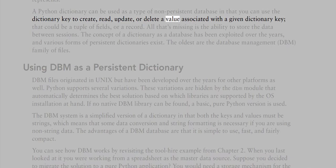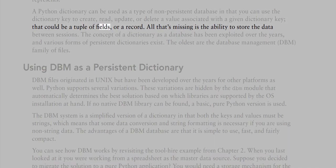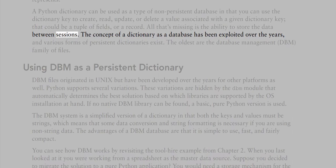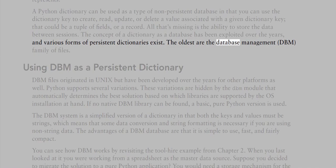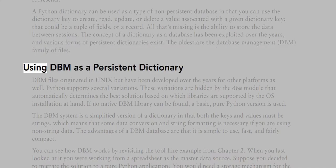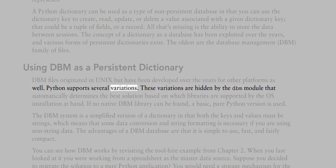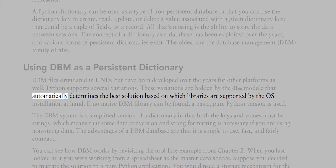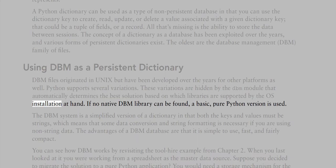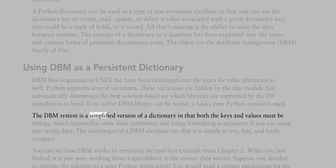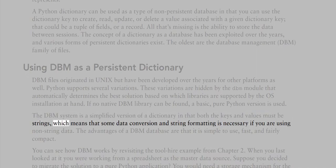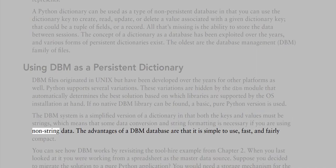A database is a data storage system that enables you to create, read, update, and delete individual records — often referred to as a CRUD interface. A Python dictionary can be used as a type of non-persistent database, using the dictionary key to create, read, update, or delete values. The DBM family of files exploits this concept, originating in Unix but developed for other platforms. The DBM module automatically determines the best library available, and requires that both keys and values be strings.